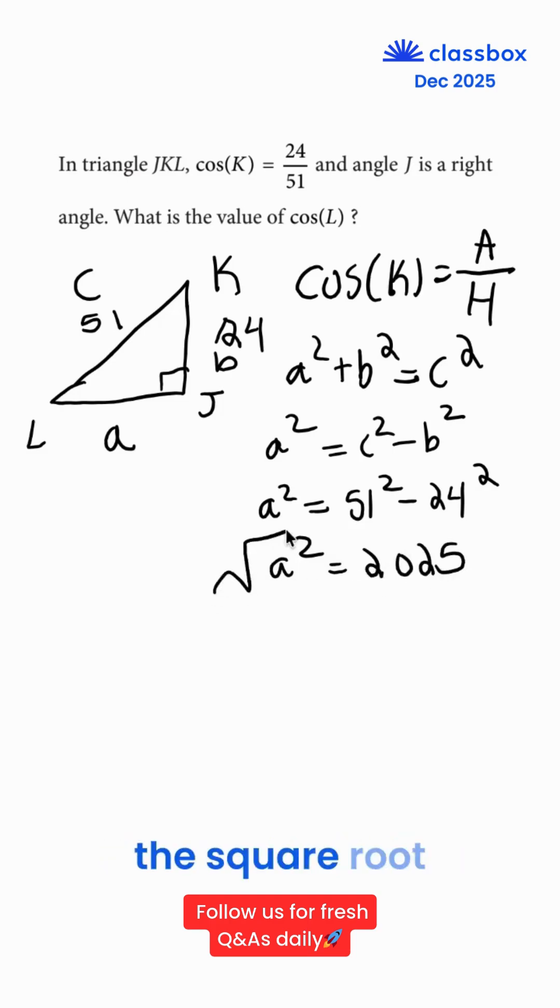We must take the square root of this to get that A is equal to 45. Our side length cannot be negative, so our answer must be 45 for A.